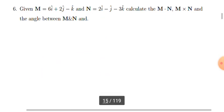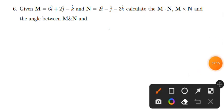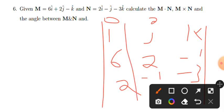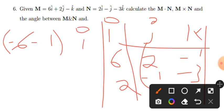For the cross product M×N, using matrix form with i, j, k in the top row. M has components -6, 2, -1 and N has -2, -1, -3.